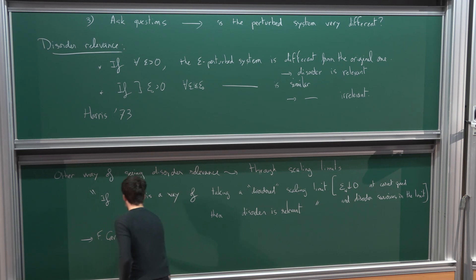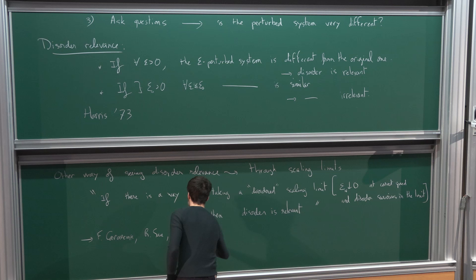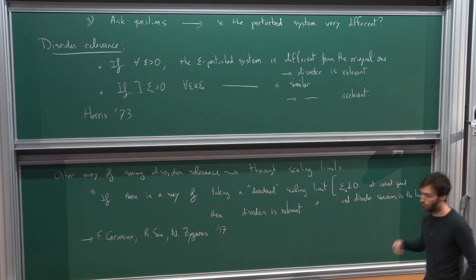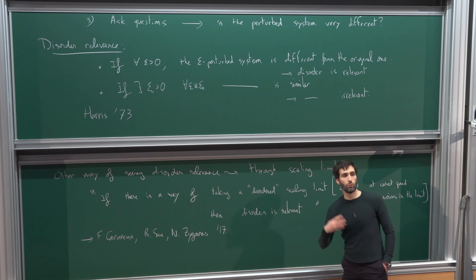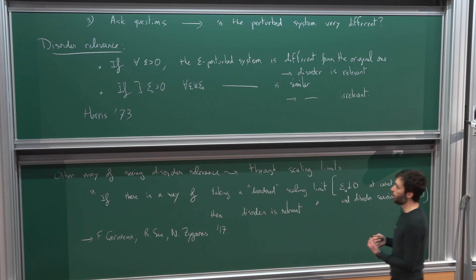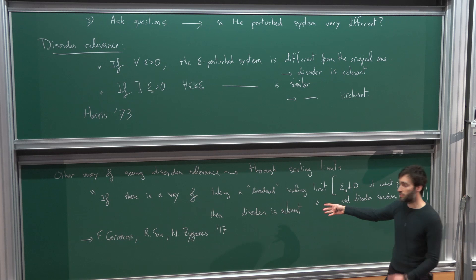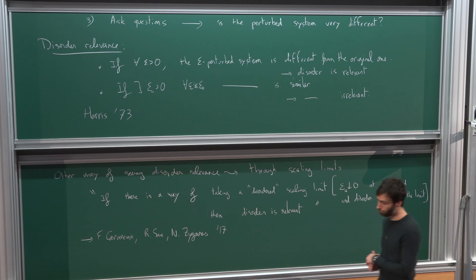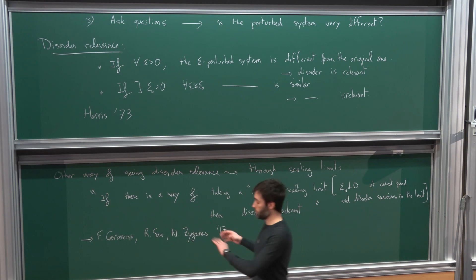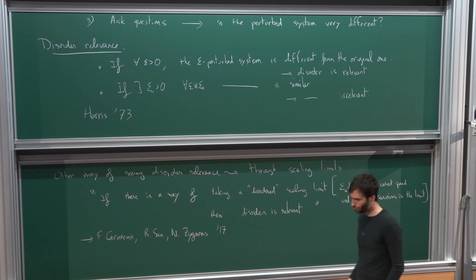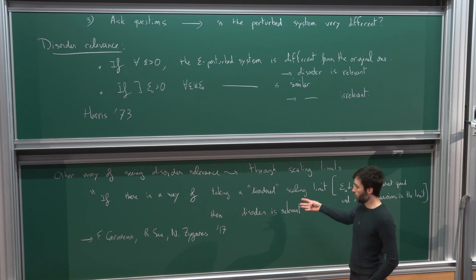If you are able to construct these scaling limits, you can try to pull back some information on your original system. The hope is that if you understand the limiting system, you'll get information on your original epsilon-perturbed system. The rest of the talk will be about doing that in the Poland-Scheraga model: constructing a disordered scaling limit and showing some kind of universality that you can pull back to the original system.